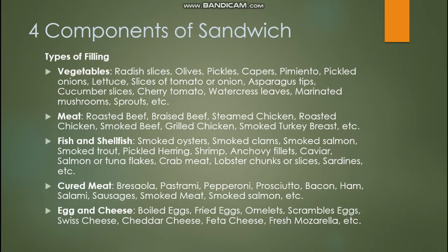Sprouts are commonly used in Vietnamese sandwiches. For meat fillings, you can use roasted beef — making sure all meats are properly cooked — braised beef, steamed chicken, roasted chicken, smoked beef, grilled chicken, smoked turkey breast, and so on.